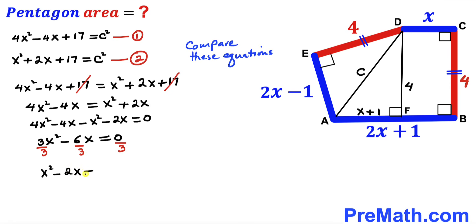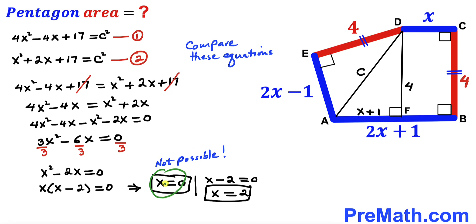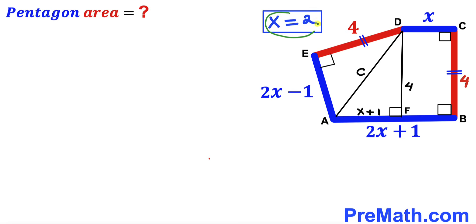Factoring out x gives x(x − 2) = 0, so either x = 0 or x = 2. Since x = 0 is not feasible, we reject it and accept x = 2. Therefore, segment CD = x = 2 units.